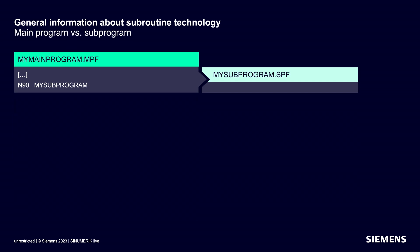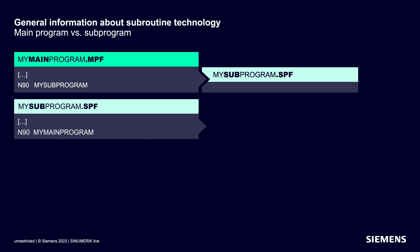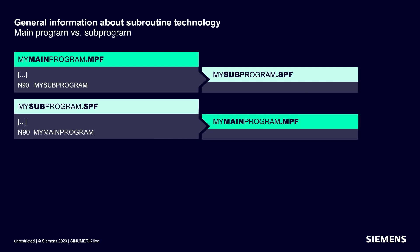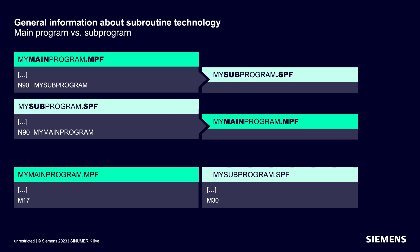A tip on handling CNC programs in CINEMERIC: CINEMERIC traditionally makes the distinction between main programs with the ending MPF and sub-programs with the ending SPF. However, this is only a superficial differentiation — CINEMERIC itself treats MPF and SPF as completely identical. It makes no difference whether you call an SPF in the MPF or an MPF in the SPF. It's also no longer necessary to distinguish between M30 and M17 at the end of the program; an MPF can end with M17 and an SPF can end with M30.